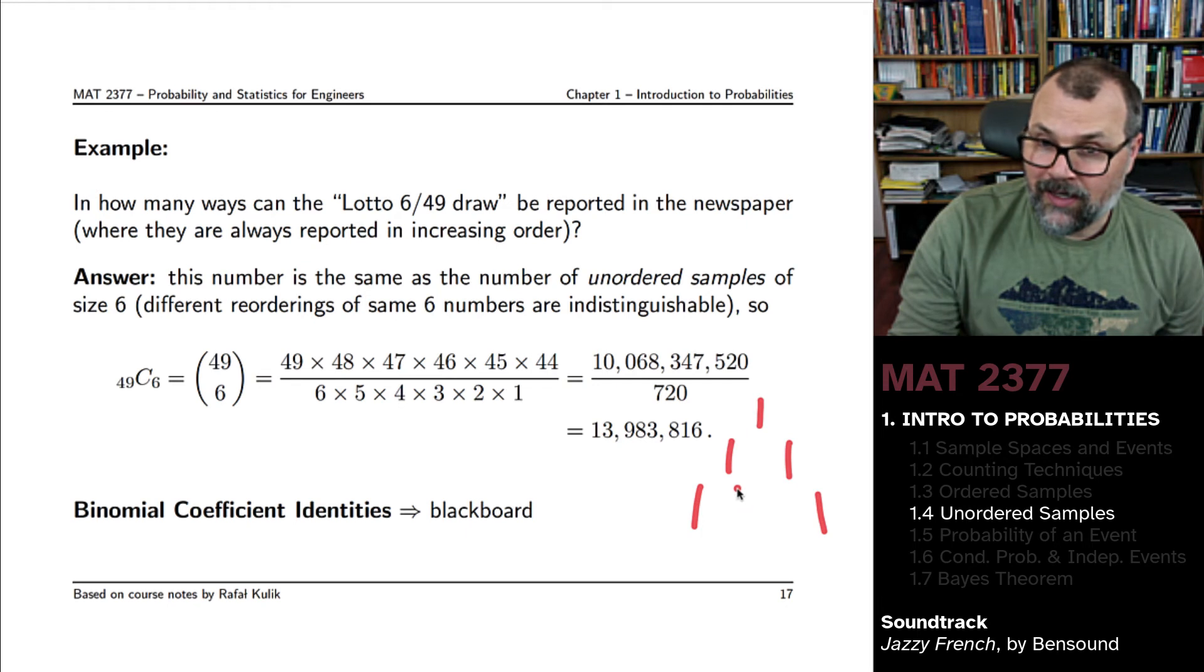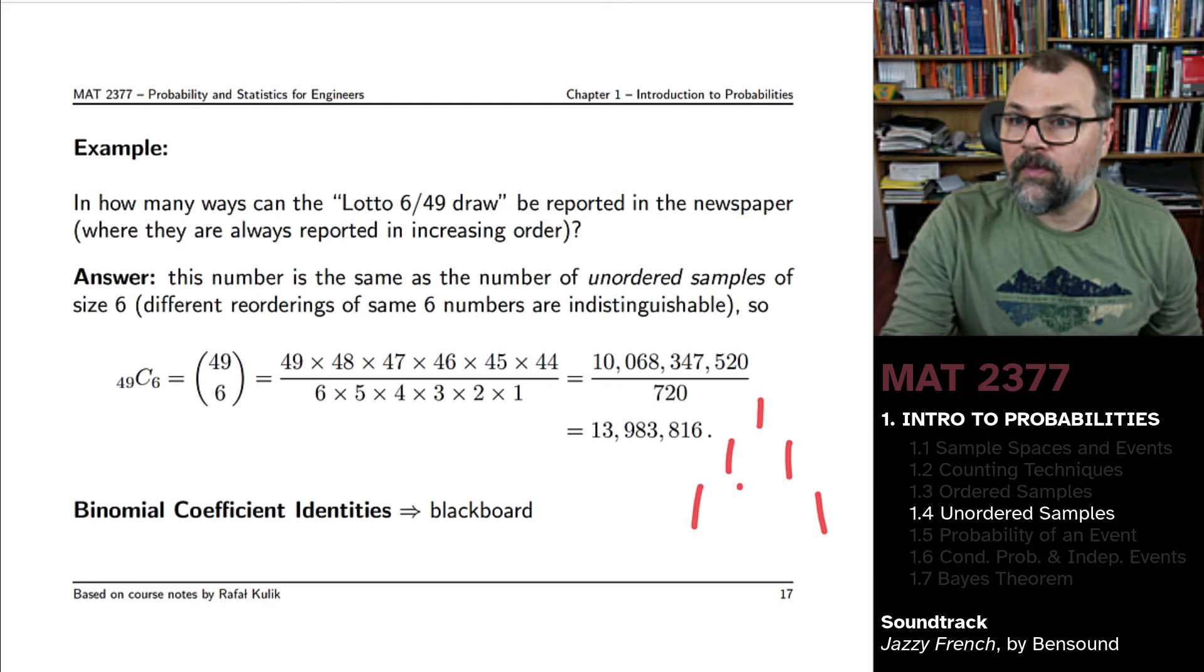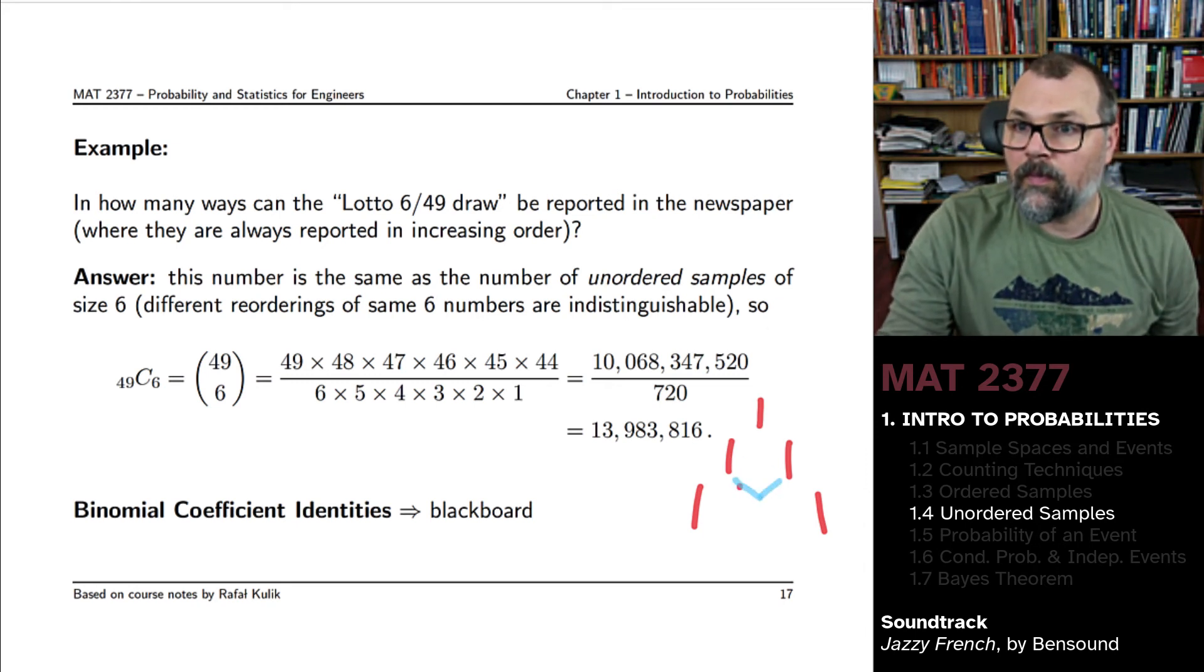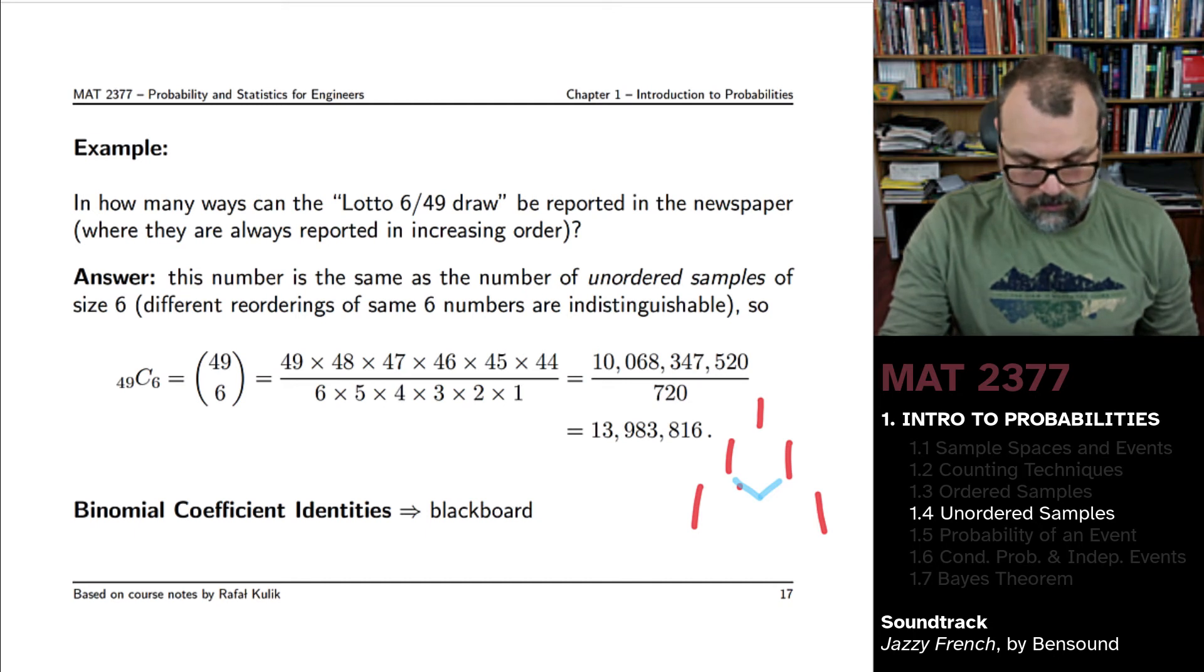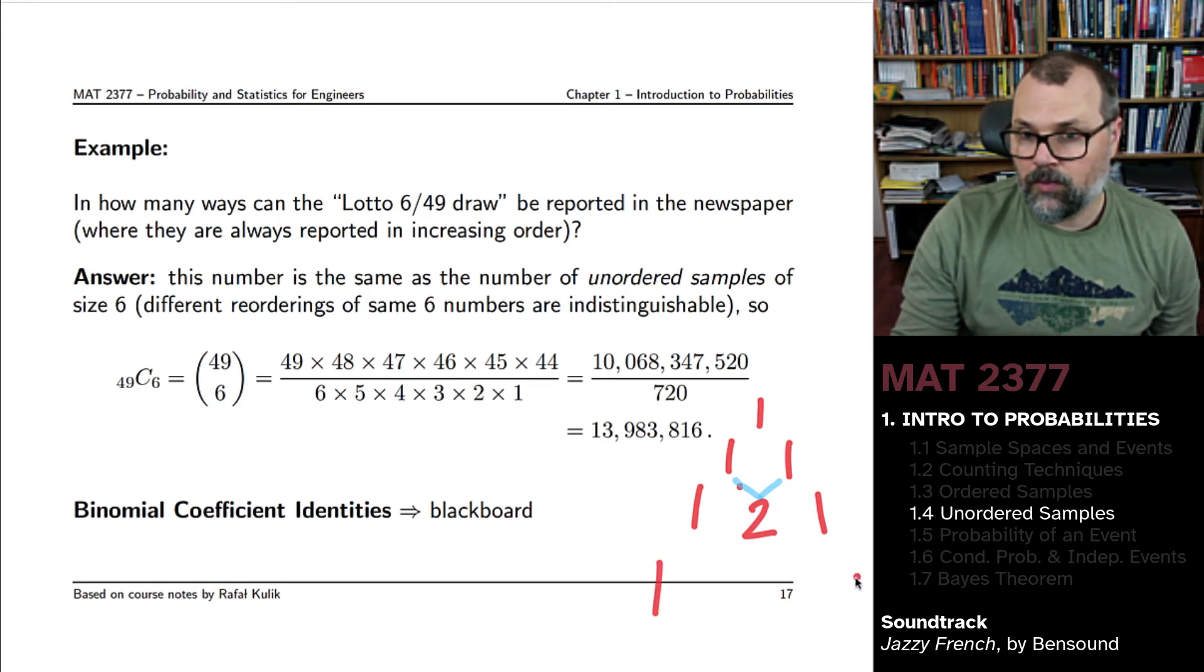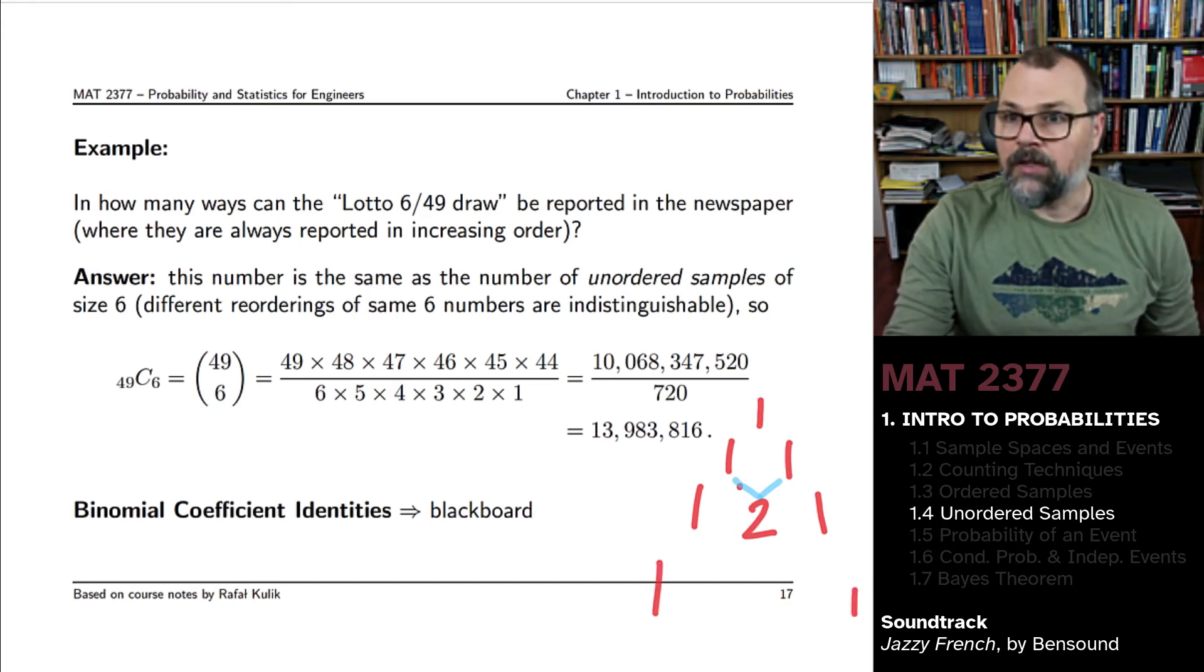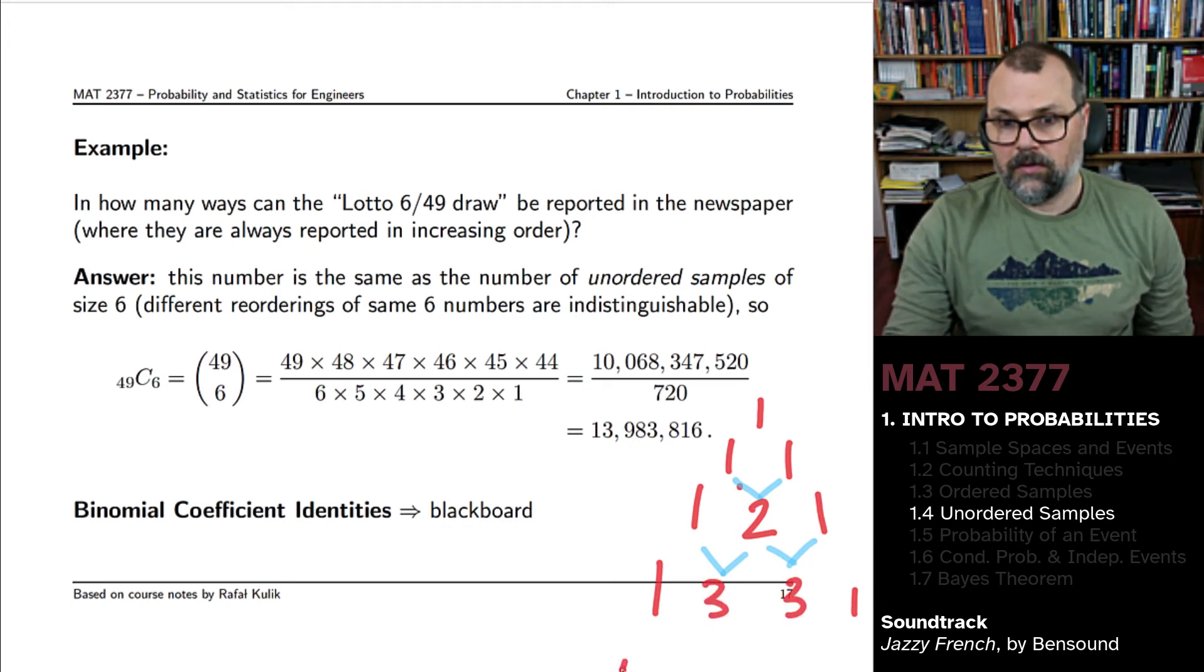And the entry at any other location is given by the sum of the two entries above it in the triangle. One plus one is two. So for your next row, you would have one and one. That doesn't change.